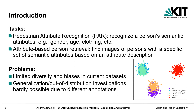As mentioned in the title, two different tasks are addressed. Pedestrian attribute recognition aims at recognizing the semantic attributes of a person. Semantic attributes are soft biometric characteristics such as gender, age, or information about clothing. The second task is closely related and tries to find all occurrences of people matching a specific attribute description. PAR is one possibility to solve this task.